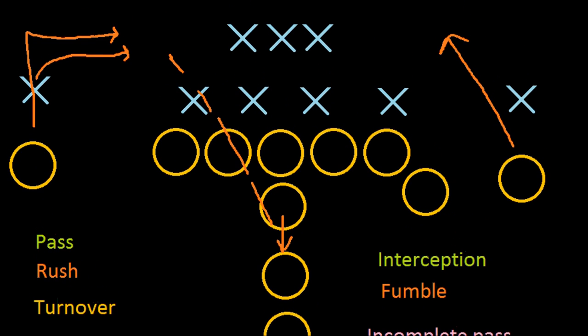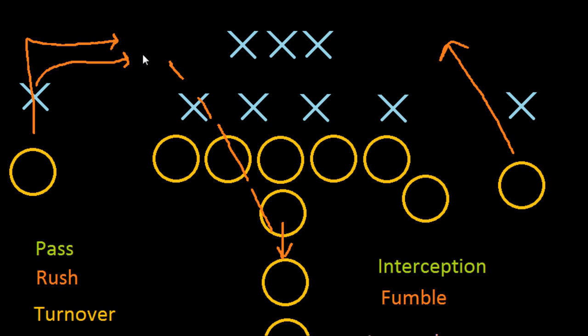Another thing that could happen is if a wide receiver does catch a completed pass and then turns to run up the field to gain more yardage — if the ball is knocked out or he drops it for any reason while running, that would be a fumble. The defense would then have a chance to jump on it and recover the fumble for their team. That's how turnovers work.